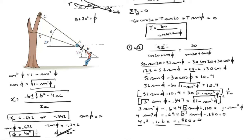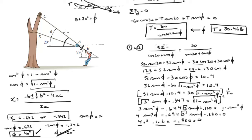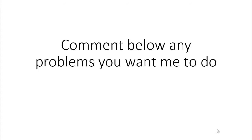Using phi equals 40 degrees, we plug into the T equation and get T equals 30.46 pounds. Since phi equals theta plus 20, theta equals phi minus 20, so theta equals 20 degrees. Final answers: the tension in cable CAD is 30.46 pounds, and the cable makes an angle theta of 20 degrees with the pulley. Please comment below if you'd like help with any problems.